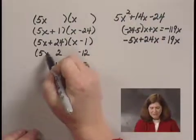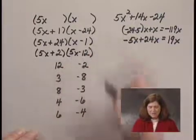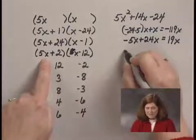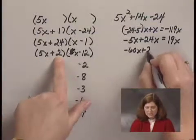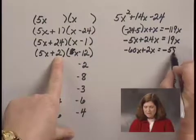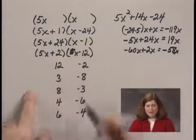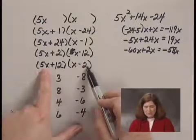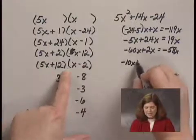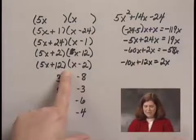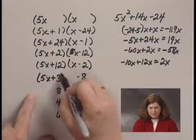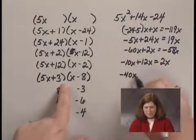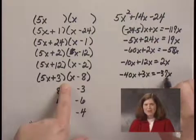So I'll try (5x + 2)(x - 12). My middle term will be 5x times -12. That's -60x + 2x, which gives me -58x. That's not right. So now I try (5x + 12)(x - 2). My middle term will be -10x + 12x, which is 2x. That's not 14. I'll try (5x + 3)(x - 8). My middle term will be -40x + 3x, which is -37x. That's not 14 or -14.